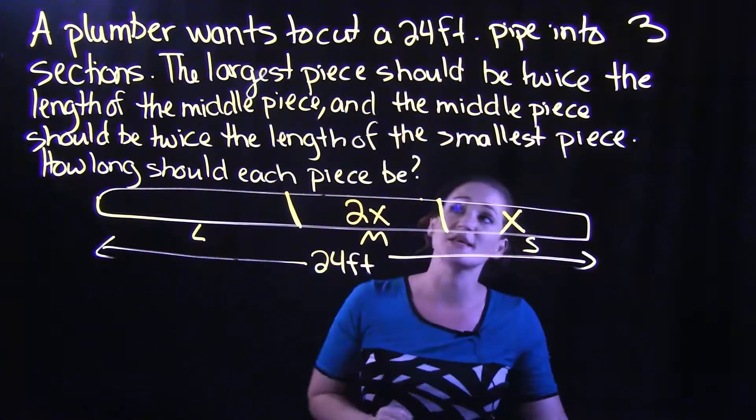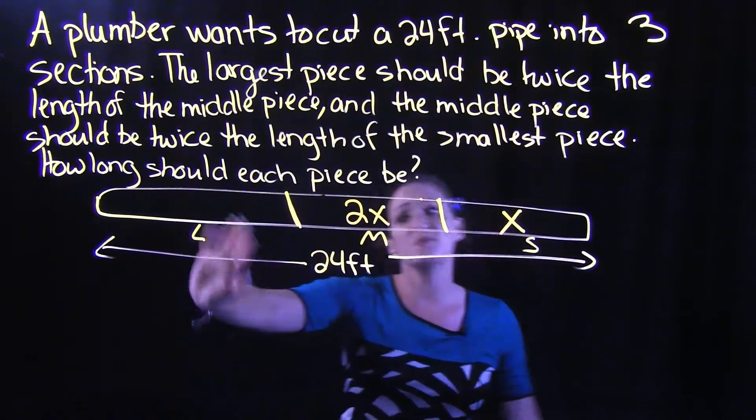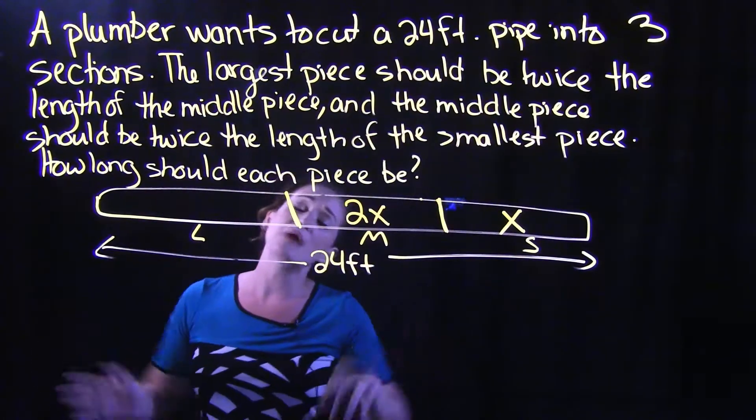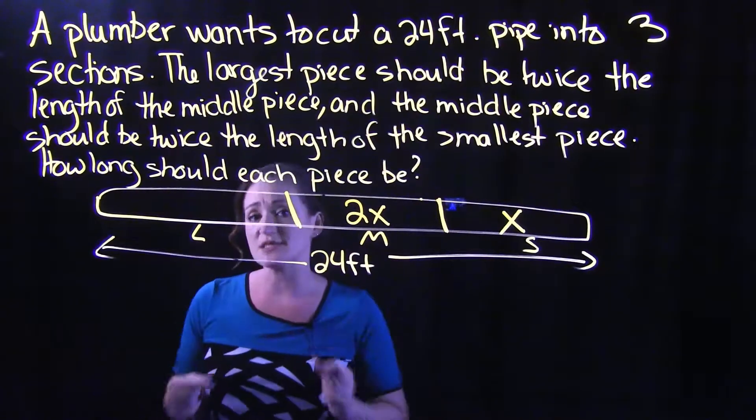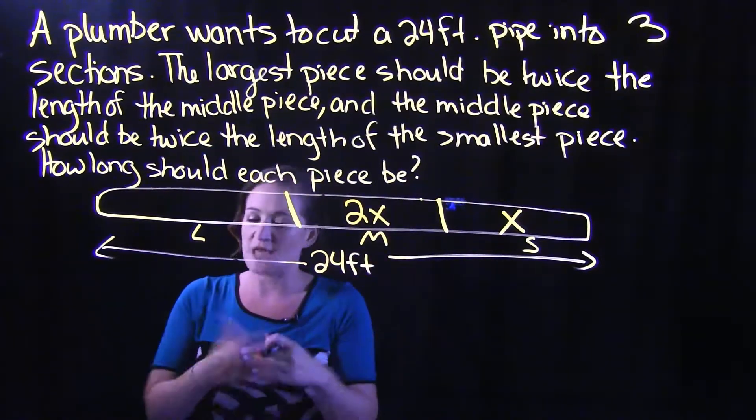And then what it says for the large piece, it says that the large piece is twice the length of the middle piece. So now we're going to double the middle piece. So the middle piece is 2X, and I want to double 2X. So I'm going to take 2X times 2.